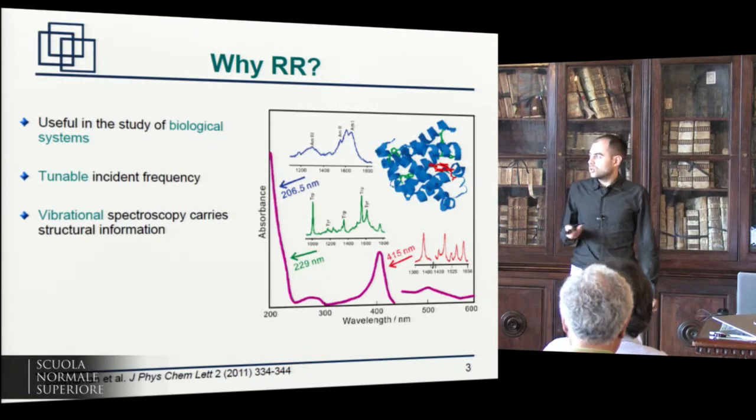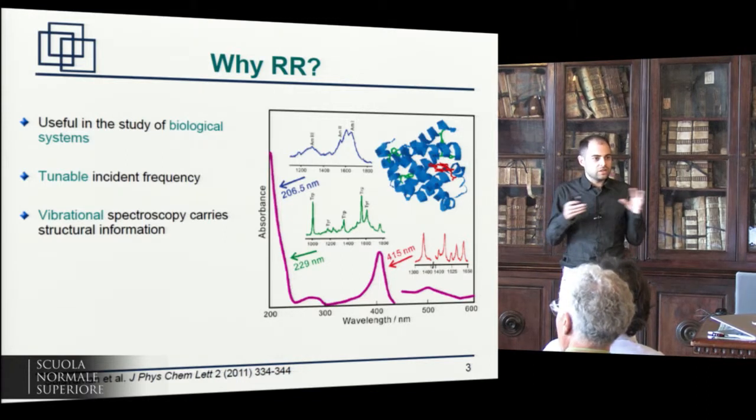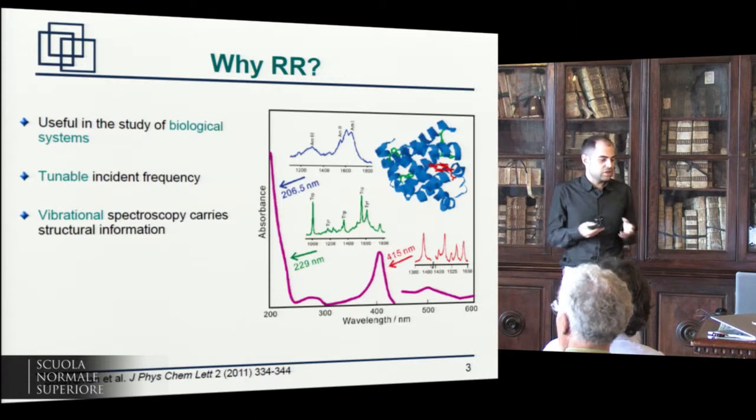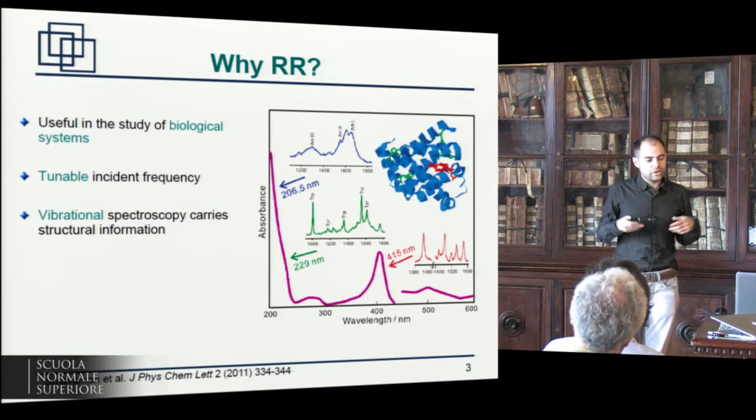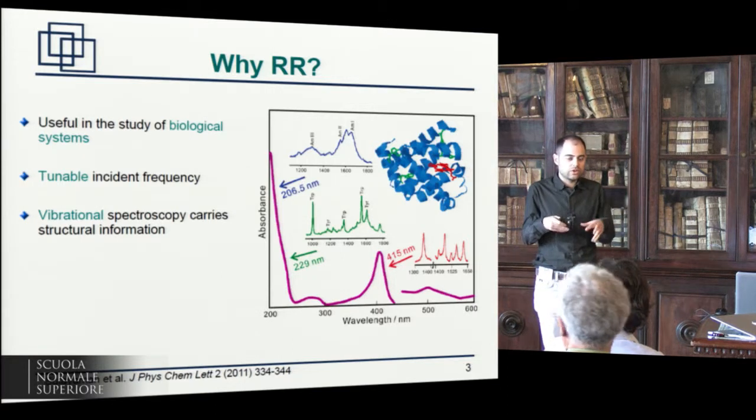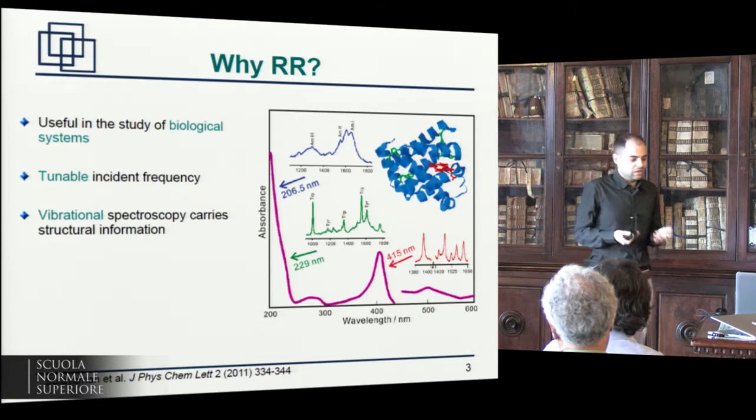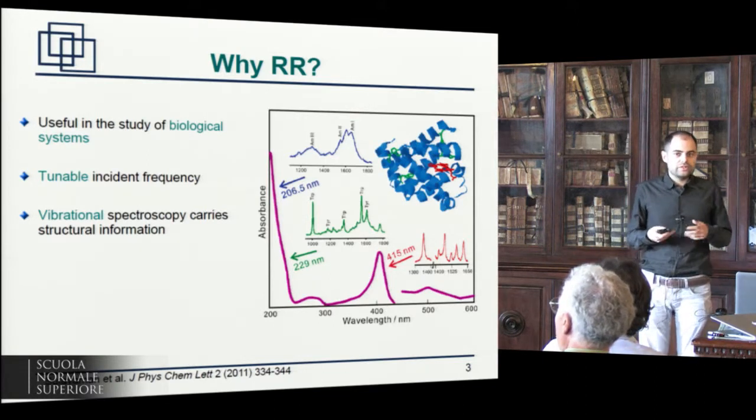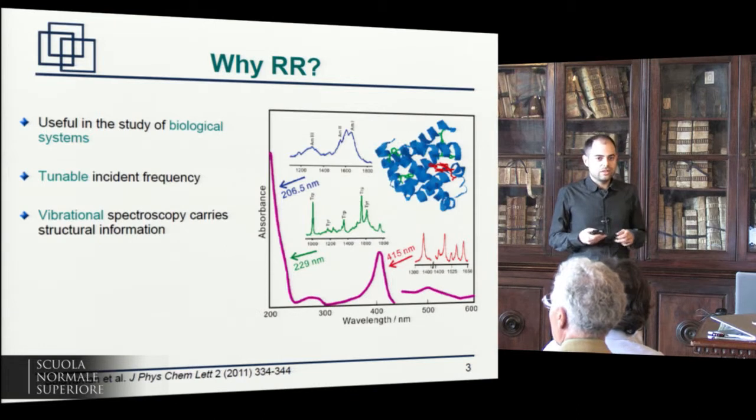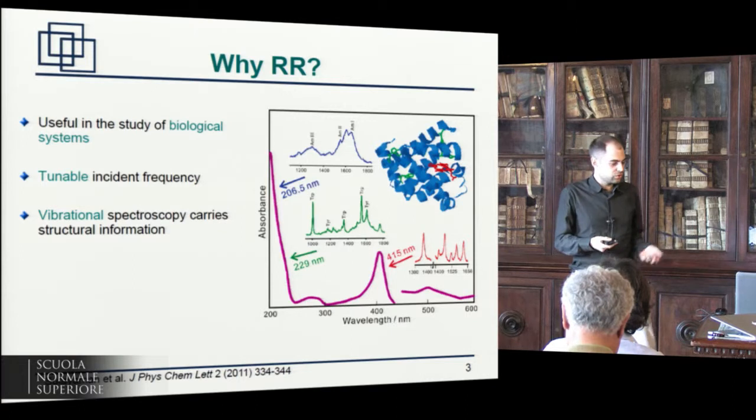And this enhancement allows you to do many things because if you have, for example, a chromophore which is embedded in a bigger system, such as a biological molecule, you can tune your incident frequency to a specific chromophore and only certain vibrations which are close to the chromophore should be enhanced. So you get a simpler spectrum, a more focused one, and something that should be easier to interpret. Of course, the interpretation is not trivial, and here's where calculations can be useful.